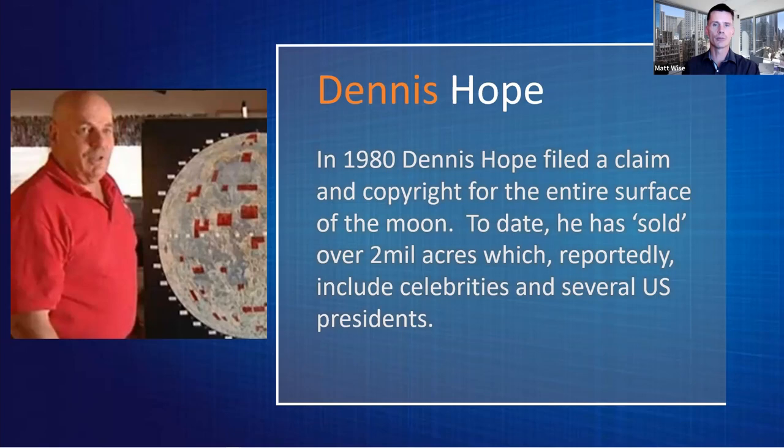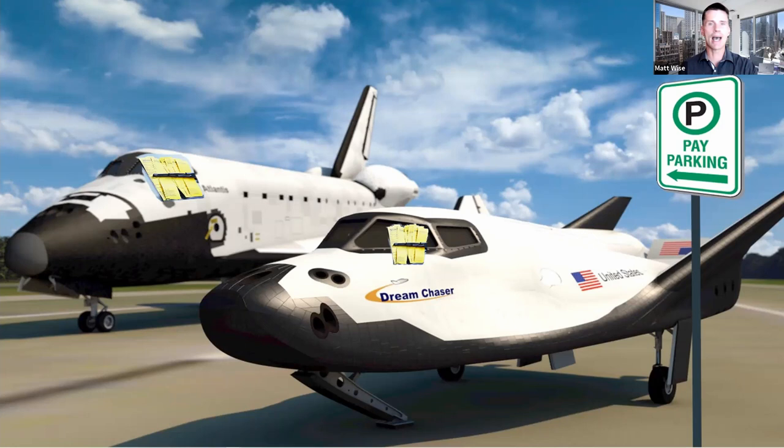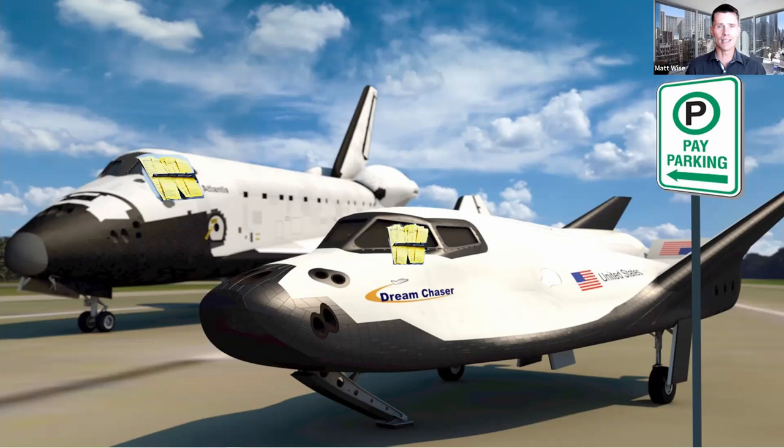A couple of guys also claimed an asteroid. A number of years ago, NASA's OSIRIS-REx probe bumped into their asteroid and collected a sample. They said they had legally claimed the asteroid before NASA arrived, so they sent NASA an invoice for parking fees. To my knowledge, NASA has yet to pay the parking ticket.